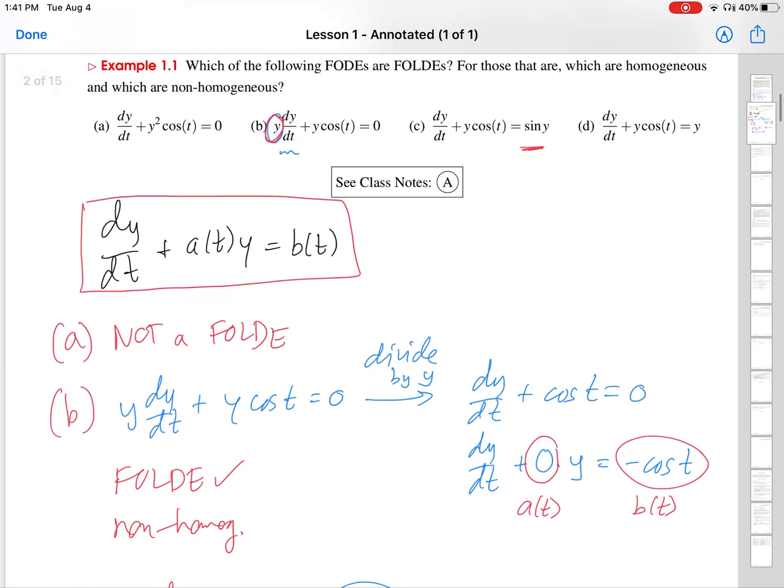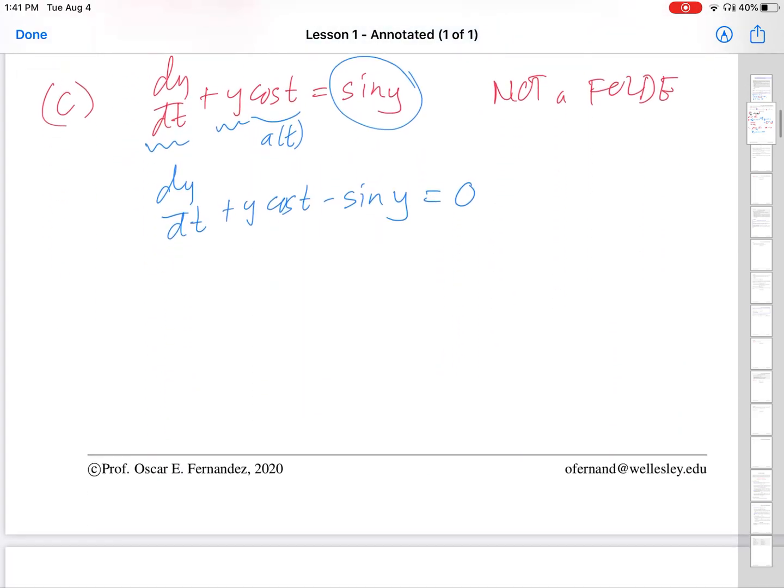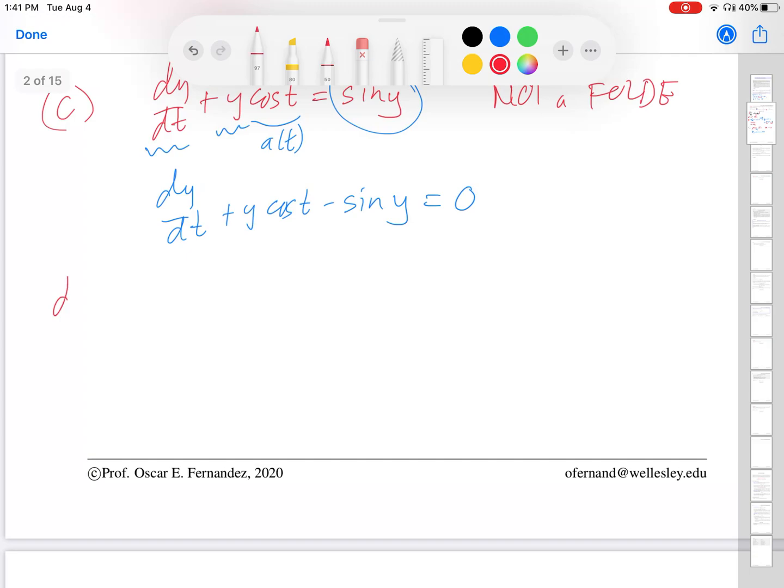We have one more left to do. And this is the part D up here. And it looks basically the same as part C, except the right-hand side is different. So, let's take a look at that one. Part D. We have DY over DT plus cosine T times Y equals Y. So, here we have a very similar situation. And I'm going to do a very similar manipulation. I have something on the right-hand side that involves Y. So, I want to get all the Ys on the left-hand side. So, I will subtract that to the left-hand side and end up with something that looks like this.